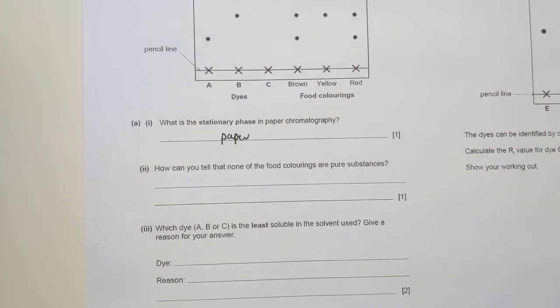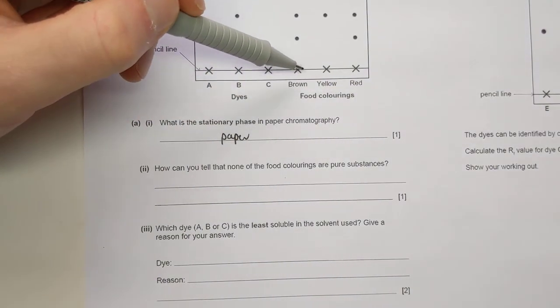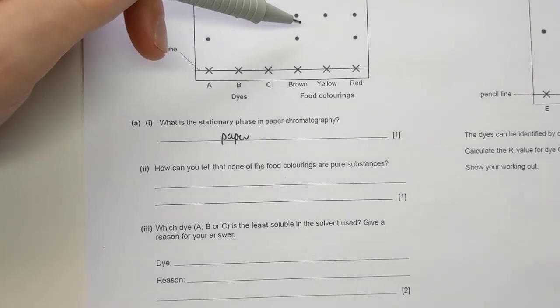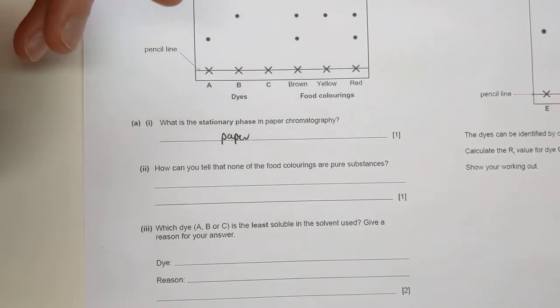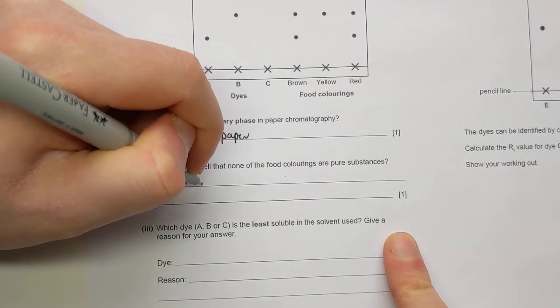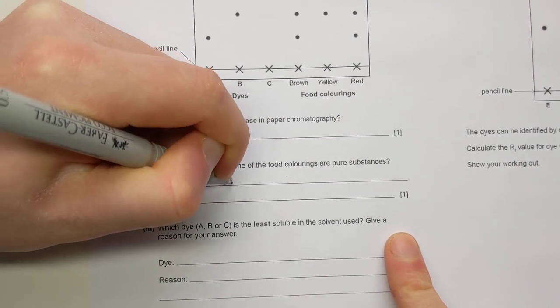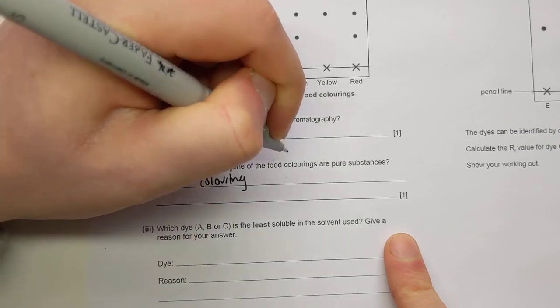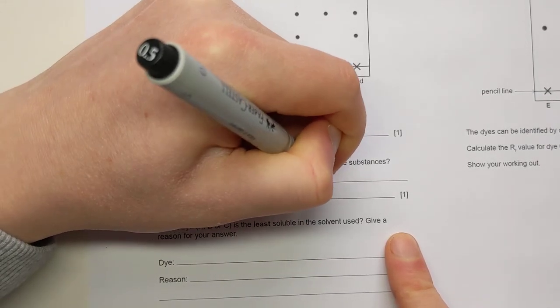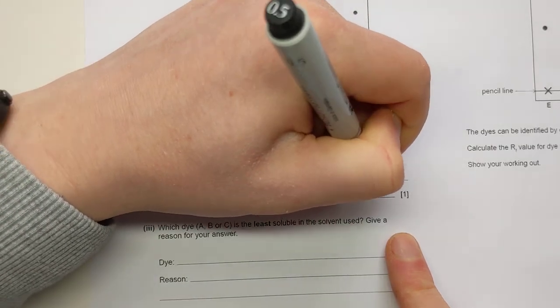How can you tell none of the food colorings are pure substances? So that's these three X's here, brown, yellow and red. They're going to be pure if there's only one dot. But all of them have at least two. So each coloring has more than one dot.